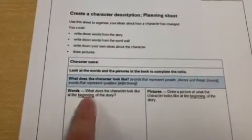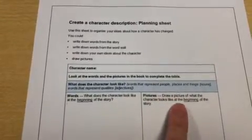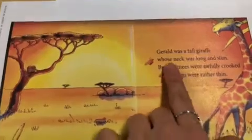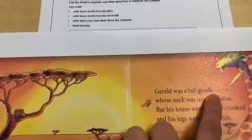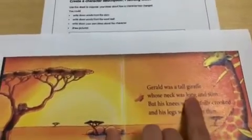What does the character look like at the beginning of the story? At the beginning of the story we know that on the first page Gerald was a tall giraffe. The word 'tall' is an adjective to describe what Gerald looked like — whether he was tall or short. His neck was long and slim. Long and slim also describe his physical appearance, so these two words are adjectives.